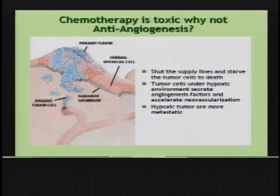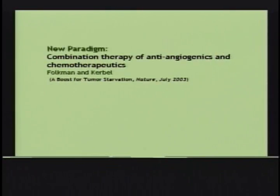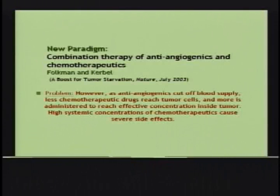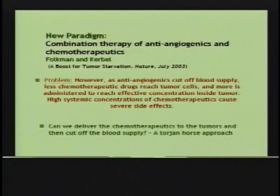There have been challenges with this strategy. Once you starve the tumor cells, you create a hypoxic environment in the tumor that makes these tumor cells more metastatic. A new paradigm proposed was to combine anti-angiogenesis with chemotherapy, but this leads to a fundamental problem: when you cut the supply lines off, less chemotherapy reaches the tumor cells. More needs to be administered, you get side effects, and high systemic concentration of chemotherapy is not desirable — essentially a catch-22 situation. We thought about approaching this problem analogously to how glycans function, attacking different compartments in different ratios with crosstalk.